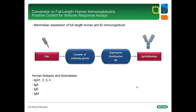As mentioned, anti-idiotypic antibodies can be converted into full-length human immunoglobulins for the development of assays to measure the immune response to an antibody drug. For this, the gene sequence encoding the variable domains of the anti-idiotypic antibody are transferred to an expression vector that adds the corresponding gene segments of the antibody constant domains. A mammalian cell culture is transfected with this vector for the production of the full-length antibody. ABD-Serrotec offers conversion of FAB antibodies into all human IgG subclasses, as well as the IgA, IgE, and IgM isotypes.